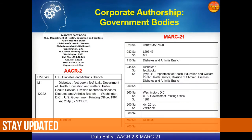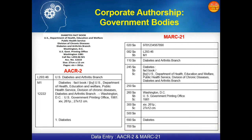In corporate authorship there are generally three cases. We are going to take the first one: government bodies. The report or book has been published by the government body, and the example given is 'Diabetes Fact Book' by the US Department of Health, Education and Welfare, Public Health Service, Division of Chronic Disease, Diabetes and Arthritis Branch, Washington DC.